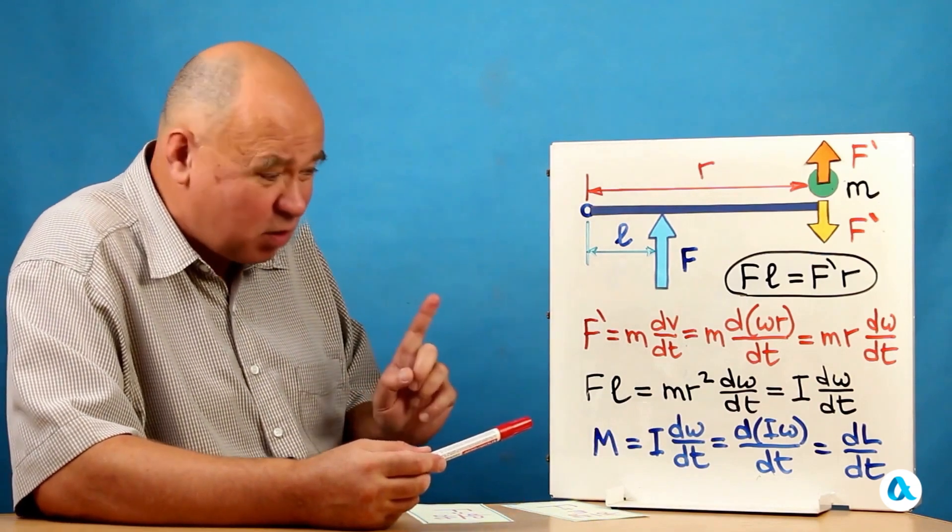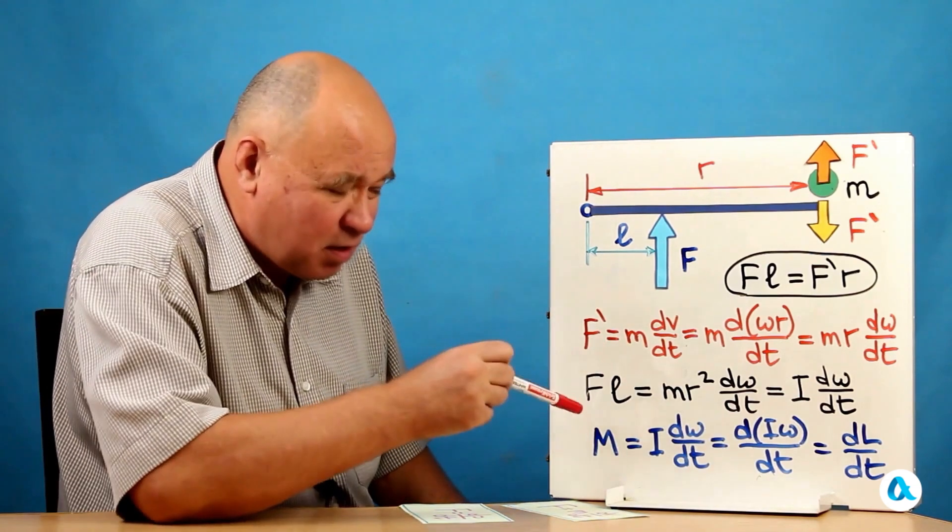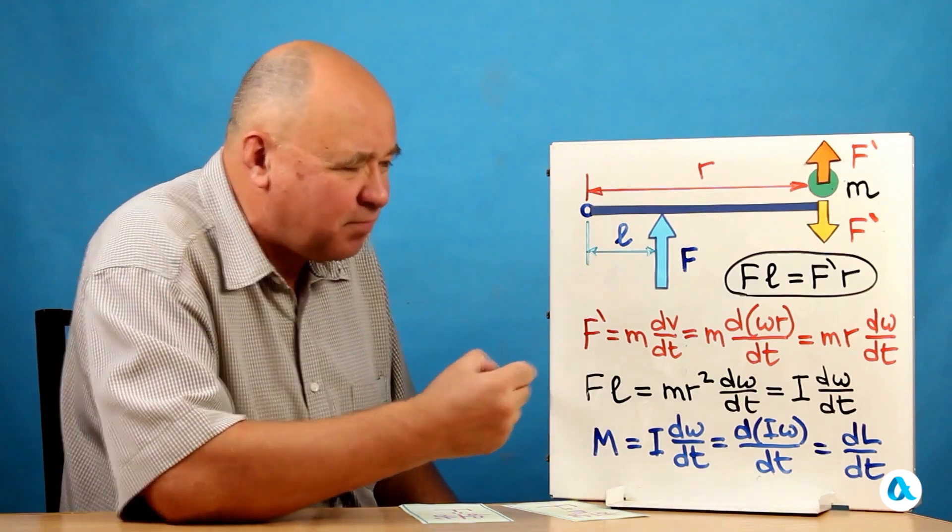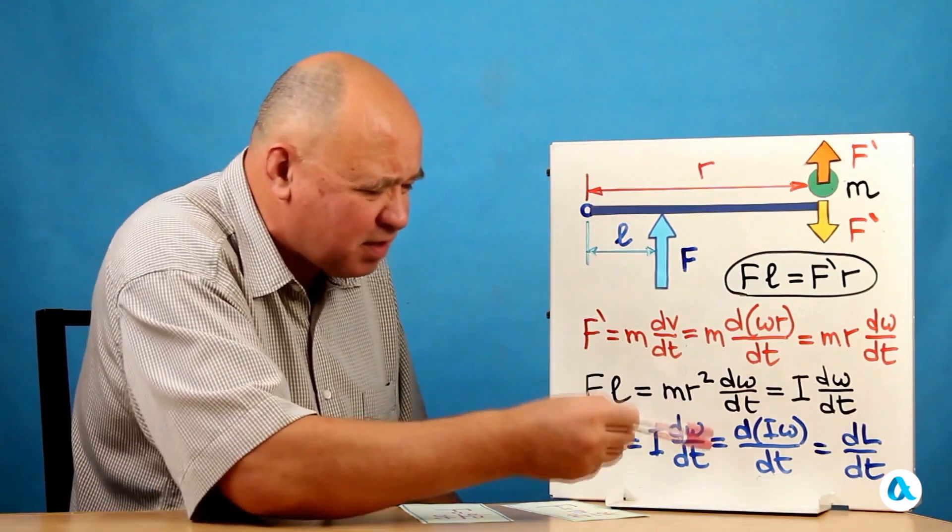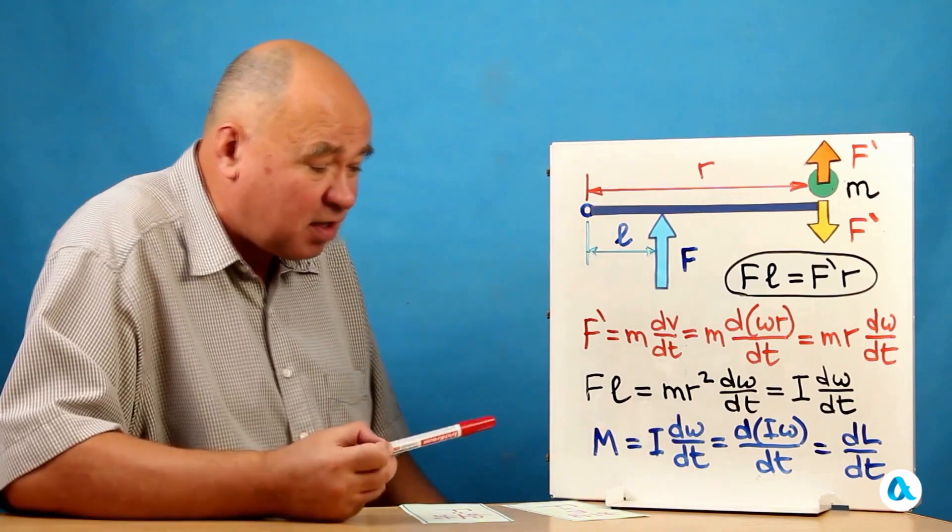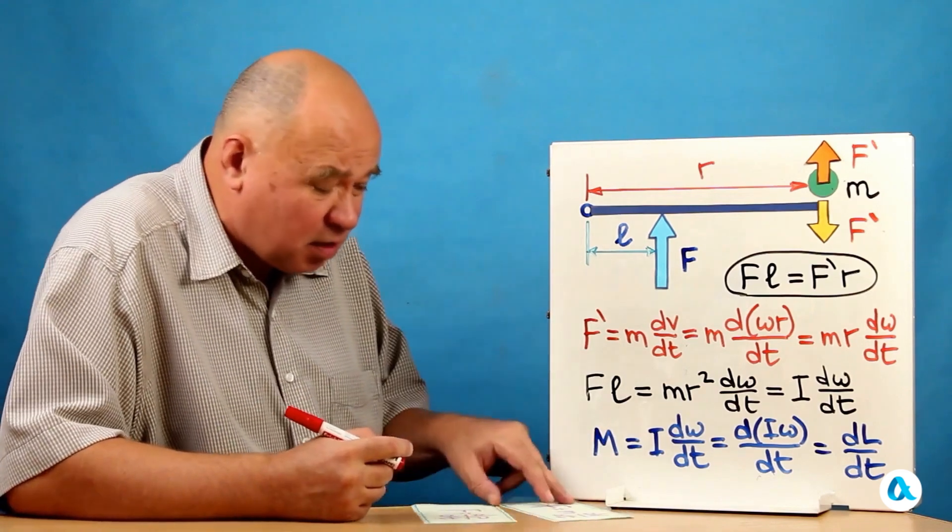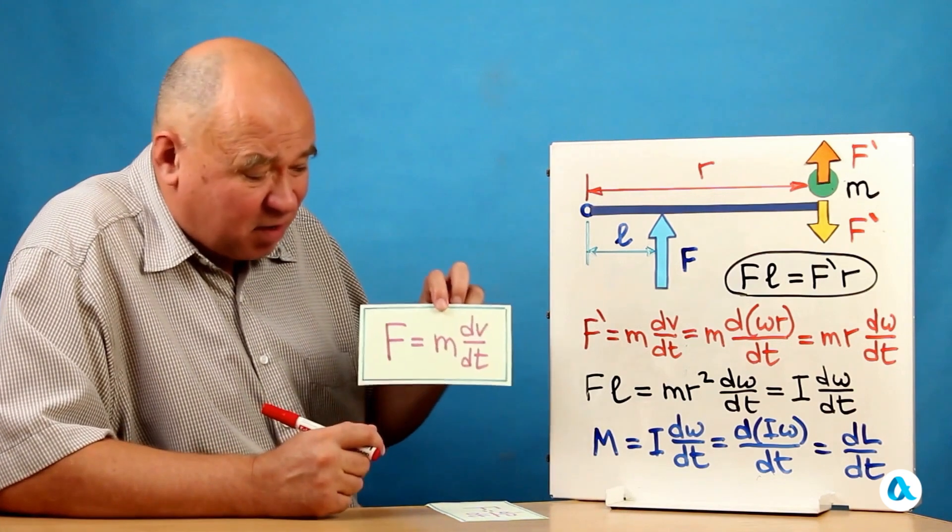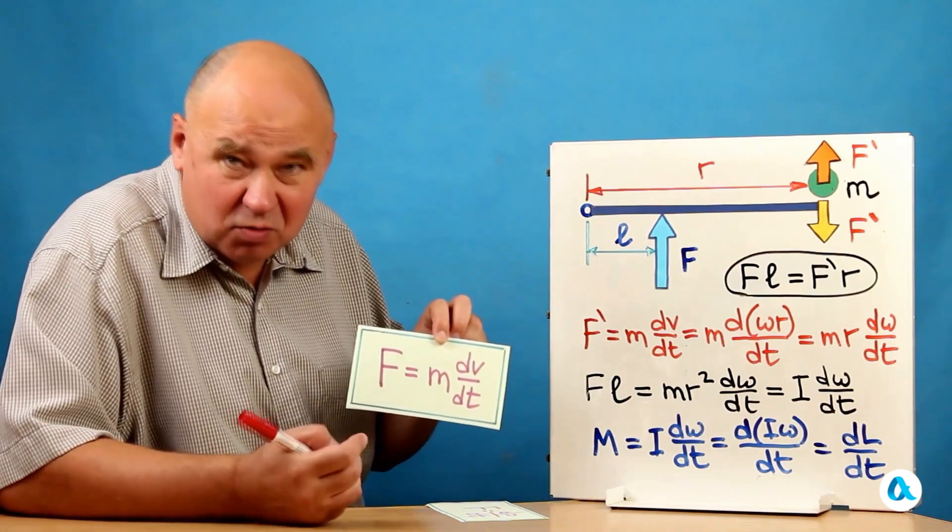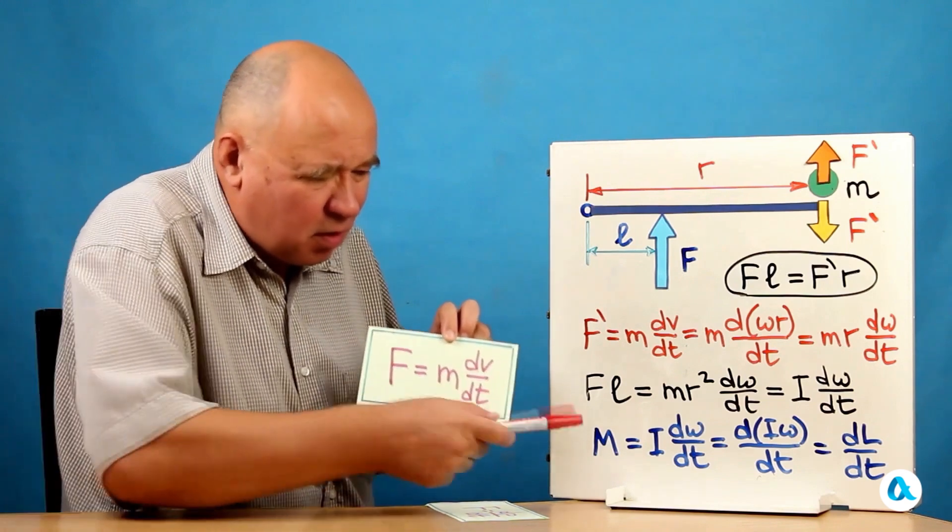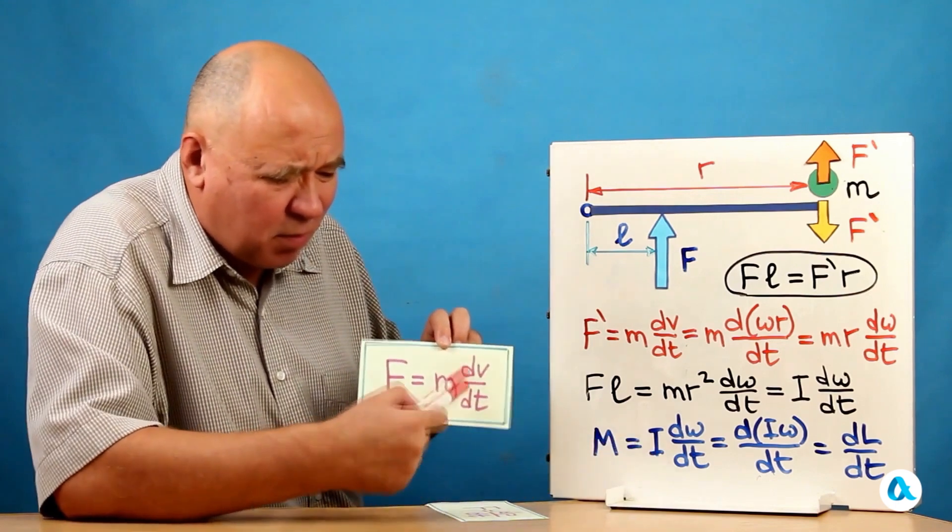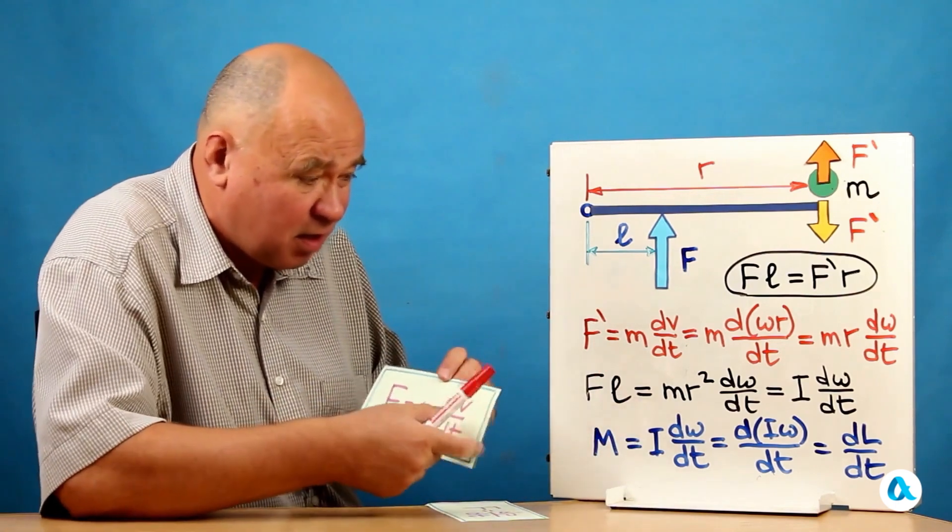I will introduce some more notations. The moment of force I will denote with the letter M. The relationship will be rewritten as M, the moment of force, equals I, the moment of inertia, multiplied by dΩ over dt, angular acceleration. It is clear that this construction is completely analogous to the expression F equals ma, i.e. m dV over dt in the case of translational motion. The force, its analog, is the moment of force. The analog of mass is the moment of inertia. And the analog of linear acceleration is angular acceleration.